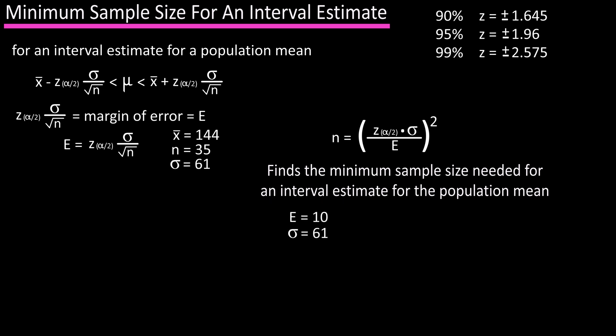So let's work through this problem using 10 as the margin of error at 90%. We have n equals quantity 1.645, which is the z-score for a 90% confidence interval, times 61, the population standard deviation, divided by 10, our margin of error, squared. Calculating out, we get 100.69. When we get a decimal or fraction in this formula, we want to round up, so our final answer is 101.